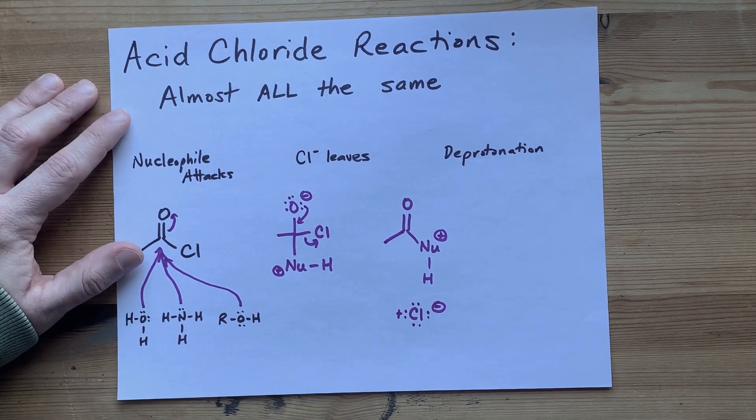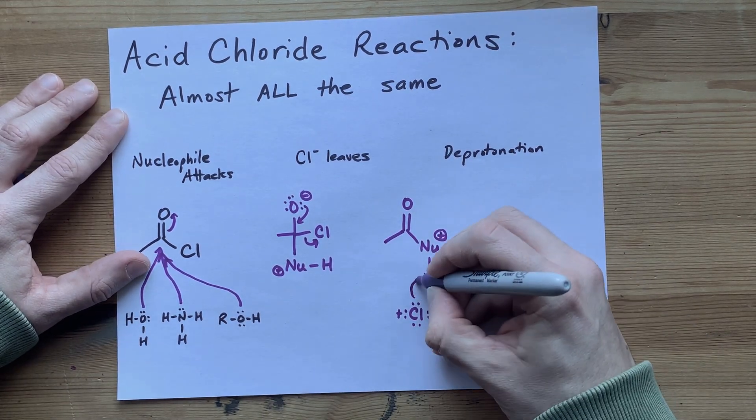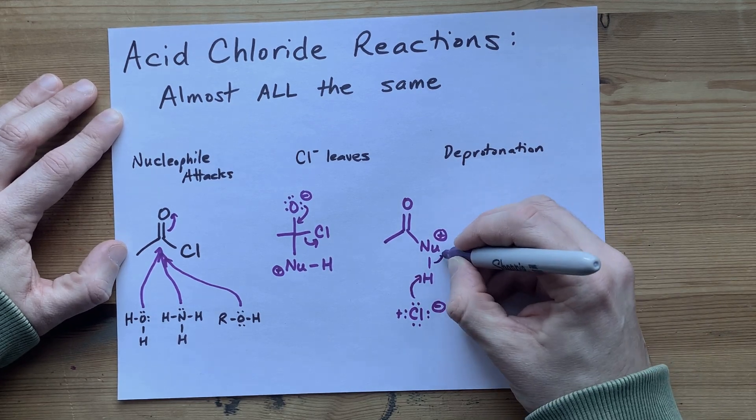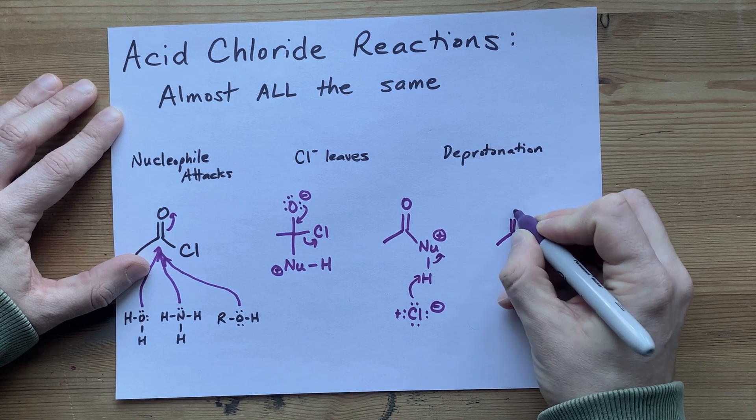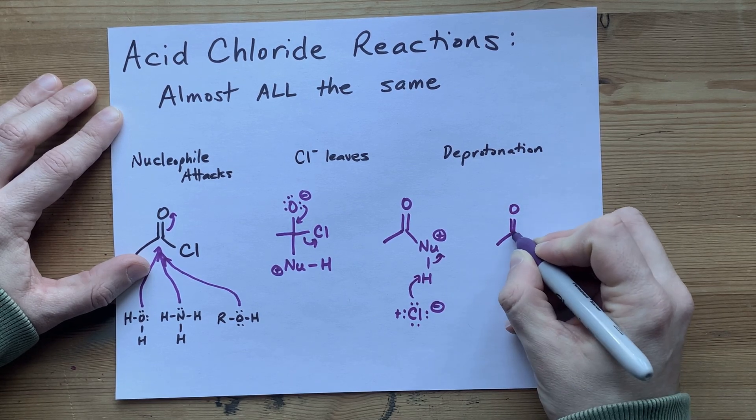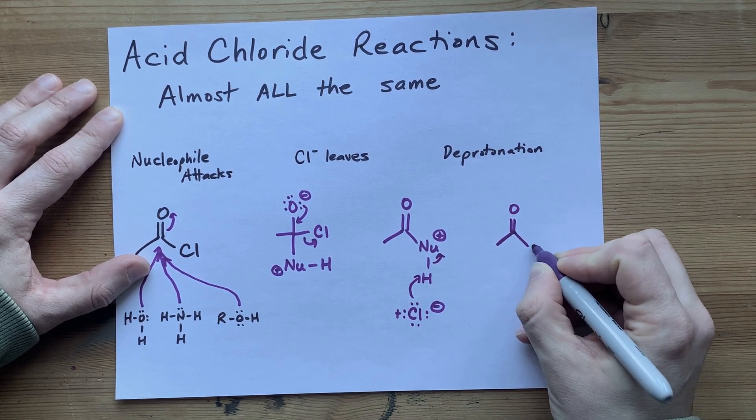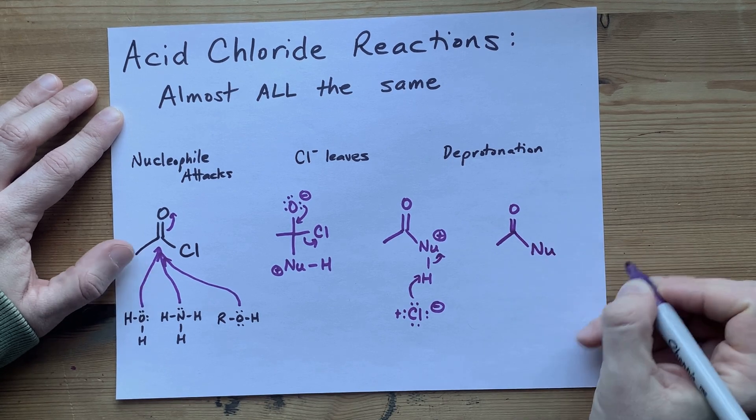And the final step ends up being this chlorine stealing that extra H. That gives the nucleophile back a lone pair of electrons. So you end up with that carbonyl carbon with its carbon chain, and now the chlorine has been replaced with a nucleophile.